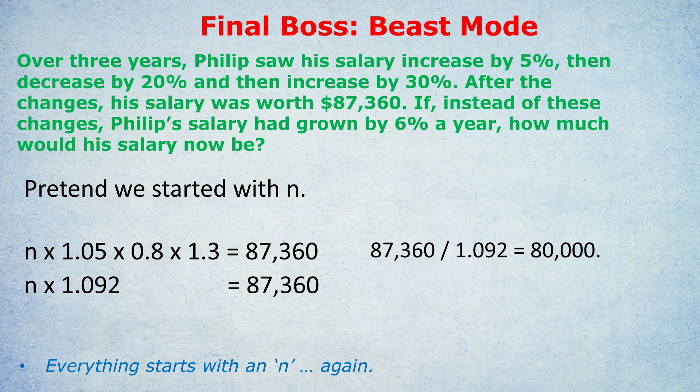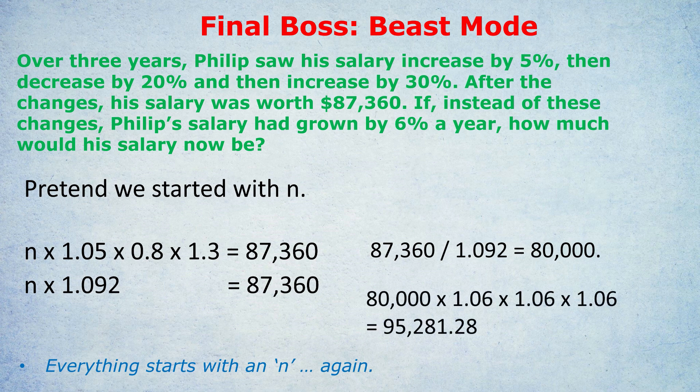Now we answer the second part. If instead his original $80,000 salary had grown by 6% a year for three years, we multiply by 1.06 three times. The GRE calculator isn't powerful enough for exponents, so we just multiply 80,000 by 1.06 times 1.06 times 1.06, giving us $95,281.28. That is the hypothetical salary Philip would have had if his salary grew at 6% per year instead.